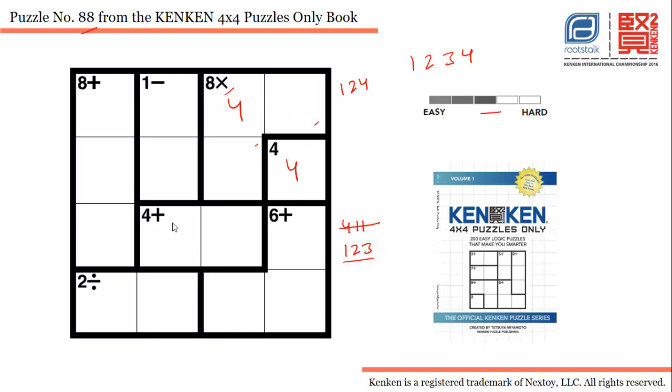That means we can use only 1 and 3, no other combination possible here. And that means 1 and 3 cannot be used here, so the only possible option is 2, 1, and 3.